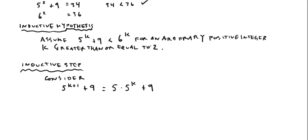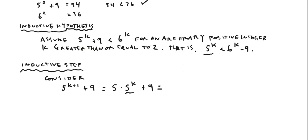Let me back up to my inductive hypothesis because I want to do a substitution for this 5 to the k. But my inductive hypothesis right now doesn't have 5 to the k isolated. So let me restate it as: I'm going to assume 5 to the k is less than 6 to the k minus 9. Now I can make this substitution for 5 to the k down here in my inductive step.